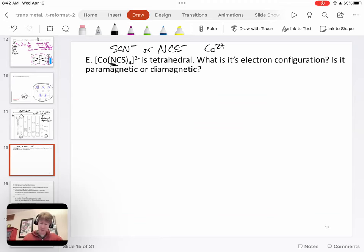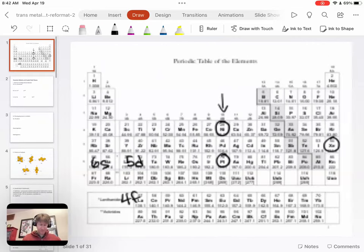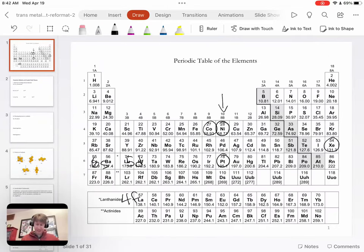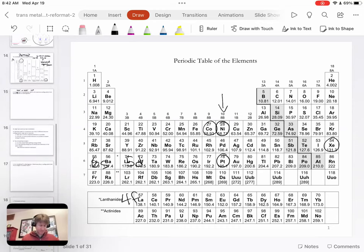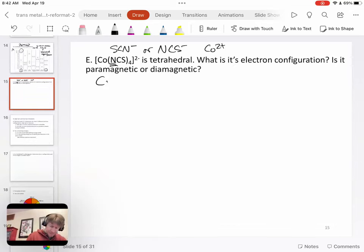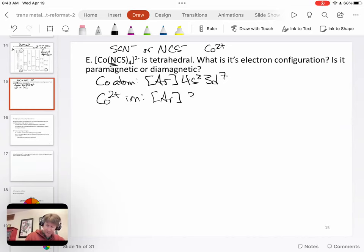So now we know the charge on the cobalt ion because that's going to be important to tell us how many electrons the cobalt has. The questions we're asking is what is its electron configuration? Is it paramagnetic or diamagnetic? And so let's tackle that. Cobalt atom is right here. It has one, two, three, four, five, six, seven electrons. So cobalt atom is going to be argon, 4S2, 3D seven. Then we have cobalt two plus ion, argon, 3D seven. So we keep those seven 3D electrons.